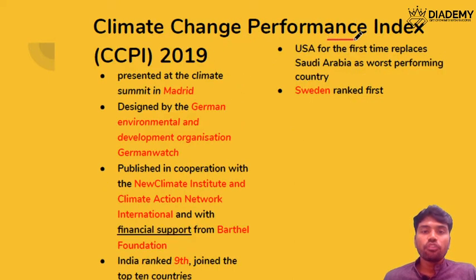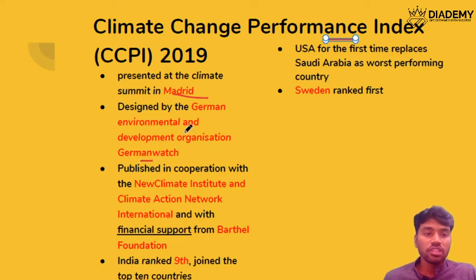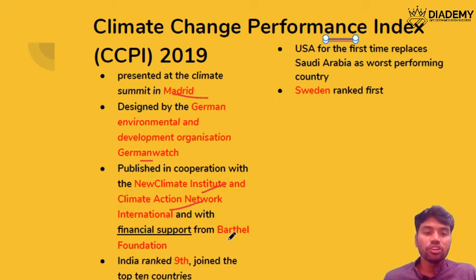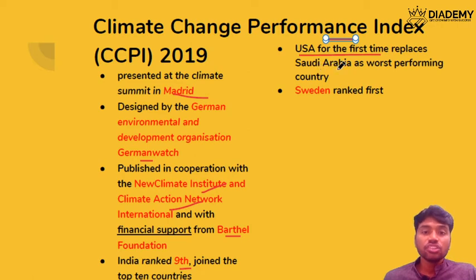The Climate Change Performance Index was introduced at the UNFCCC meeting in Madrid. It is published in cooperation with the New Climate Institute, Climate Action Network International, and with funding support from the Böll Foundation. India has been ranked ninth, now included in the top ten. The USA replaced Saudi Arabia as the worst-performing country for the first time. Sweden ranks first.